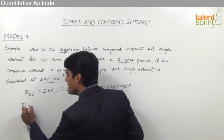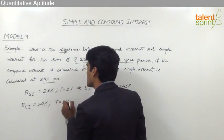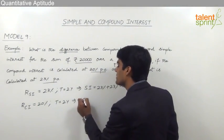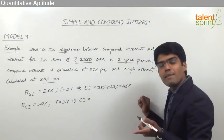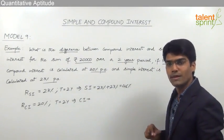And as given in the question, the rate of compound interest is 20% per annum and the time period is 2 years. So going by the concept of percentages, we can say that the total compound interest would be A plus B plus AB by 100% where A is nothing but 20 and B also is 20.